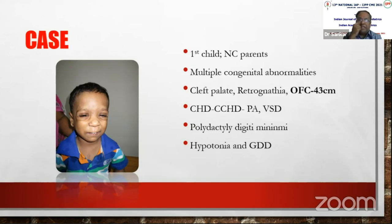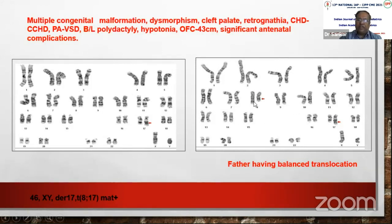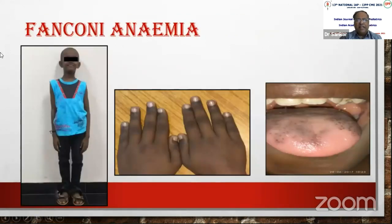A case: first child of consanguineous parents with multiple congenital abnormalities — cleft palate, retrognathia, congenital heart disease, polydactyly, hypotonia, and global developmental delay. Karyotype showed extra material on chromosome 7. Parental karyotype revealed an 8;17 balanced translocation, making the child a partial trisomy 8. Amniocentesis in the next pregnancy identified a normal karyotype and they delivered a normal baby.